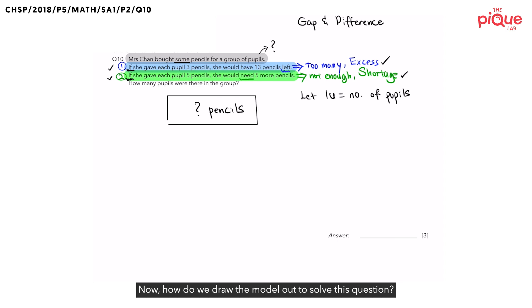Now, how do we draw the model out to solve this question? We know that Mrs. Chan has some pencils, indicated by the black model that we have drawn earlier. Let's attempt to draw case one. First, we copy and paste what Mrs. Chan has. We know that the keyword left means that she has excess pencils. Let's cut a portion out from this model to set aside for this excess. So what happened to the remaining balance? Referring to case one, she gave each pupil three pencils. Keep in mind that we have one unit of pupils. Mrs. Chan actually gave away three units worth of pencils. We can note this down in our case one blue model.